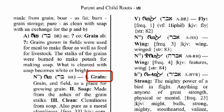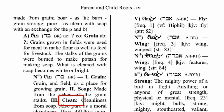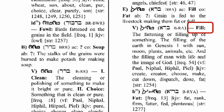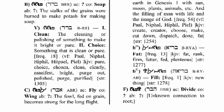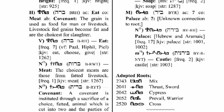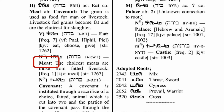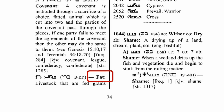This word has the meanings of grain, soap, and clean. This word means clean and choice. Here we have fill and fat. Divide. Divide, soap. Here we are back at the root of the Hebrew word for covenant: eat, meat, covenant, fat, and meat again. Soap and clean.